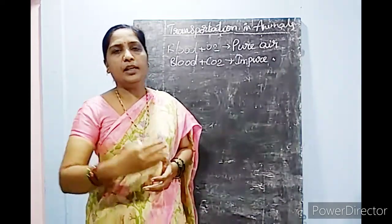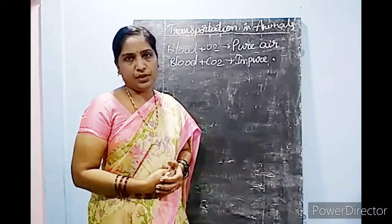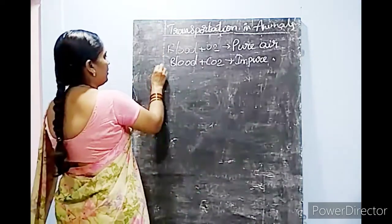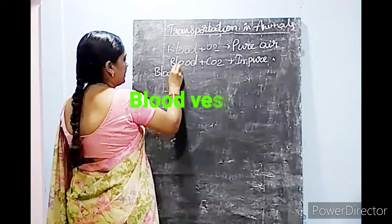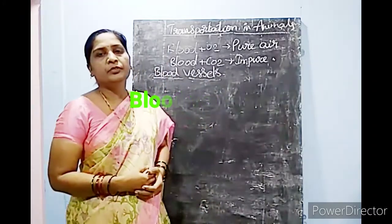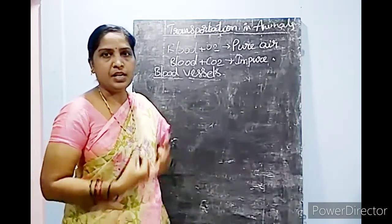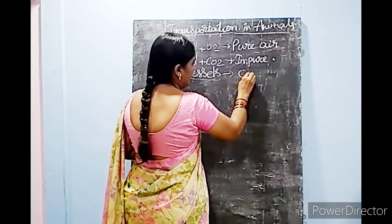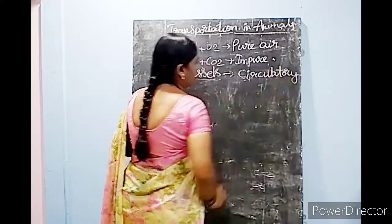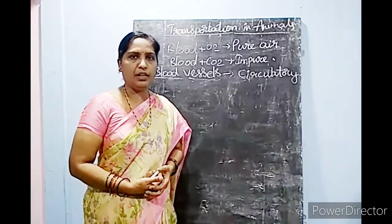This deoxygenated blood should come back to the heart, and from the heart it goes to the lungs for purification. This is all done by the blood vessels. Today we are going to discuss about blood vessels. Blood vessels take an important role in the circulatory system. Circulation means the transportation of nutrients and oxygen throughout the body. In the circulatory system, blood vessels are equally important alongside blood.